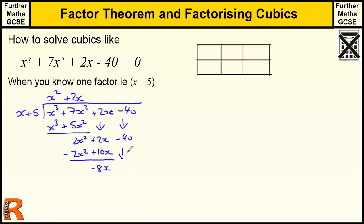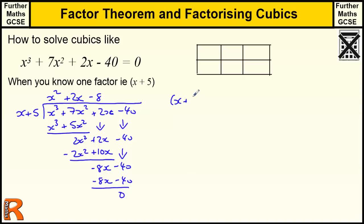We bring this down to make minus 40. And if we've done it right, there should be one number that multiplies by x plus 5 to give us minus 40. Luckily there is — it's minus 8. Minus 8 times x is minus 8x, and minus 8 times 5 is minus 40. That finishes it off nicely. So our remainder when we divide by x plus 5 gives us x² plus 2x minus 8.